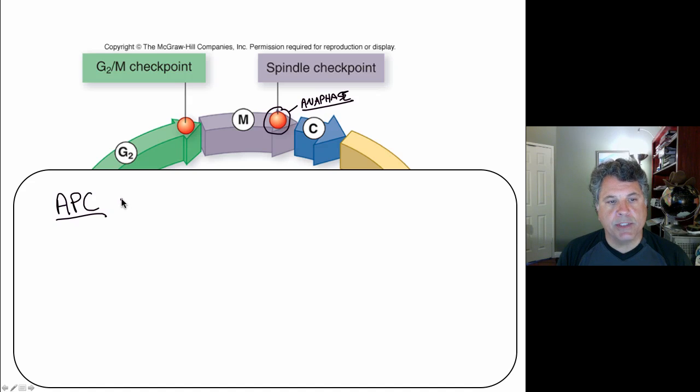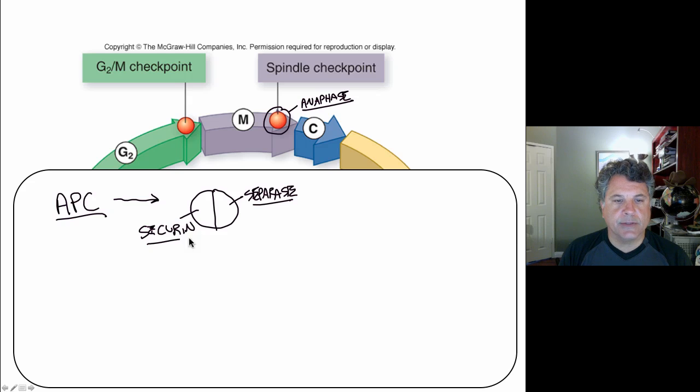And the chromosomes are in the center of the cell. APC acts by inhibiting an inhibitor. So there is a protein called separase, and separase is bound to an inhibitor which inhibits the action of separase, and this is called securin. Securin secures the separase and keeps it from acting.